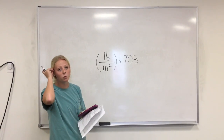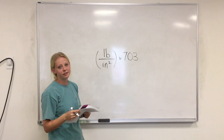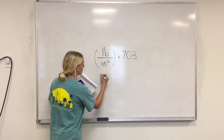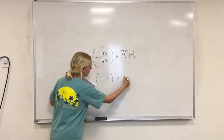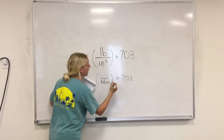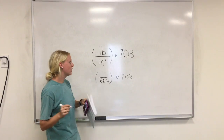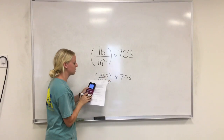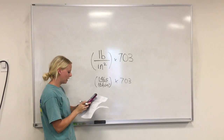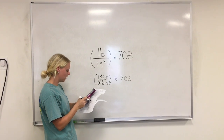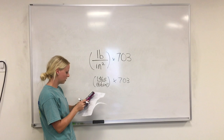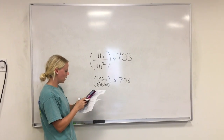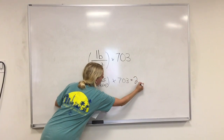Before you begin the test, you need to gather key information. Our individual today is Holly — she's female, 66 inches tall, and weighs 146.5 pounds. You plug those values into the BMI equation using your calculator, and we get a BMI of 23.6.